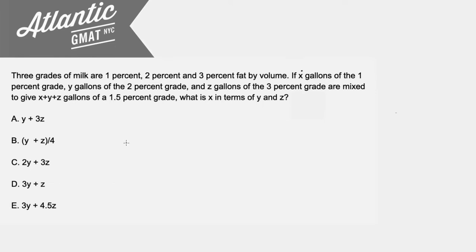This is a mixture slash weighted average question from the GMAT prep tests. It comes up a lot in tutoring. Most people don't get it right the first time around, and usually the problem is the fact that there are a bunch of variables in the question. You've got three variables.